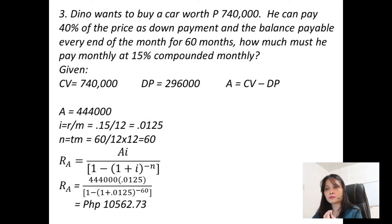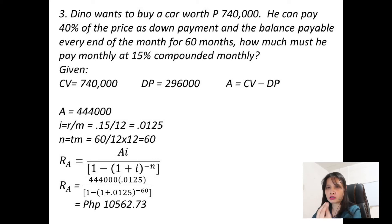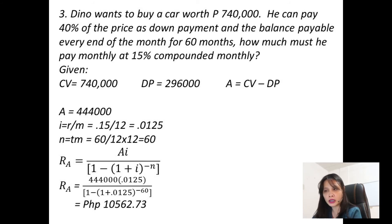Solve for periodic rate: 0.15 divided by 12 = 0.0125. For N: 60 months divided by 12, times 12 = 60 periods. Since the given money is a present value, apply the second formula. The periodic payment (monthly payment) is $10,562.73.